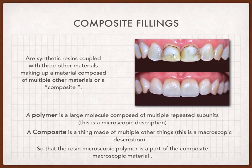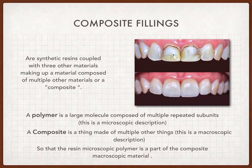Here I want you to know two different terms that seem similar but are completely different. The first is a polymer, which means a large molecule composed of multiple repeated subunits — a microscopic description. On the other hand, we have a composite — and when I say composite, I don't mean the composite filling, but the term used in physics or chemistry, meaning a thing made up of multiple other things, which is a macroscopic description. So the resin microscopic polymer is a part of the composite material.